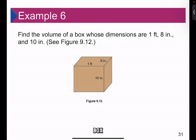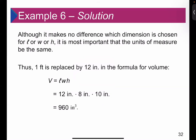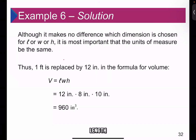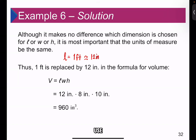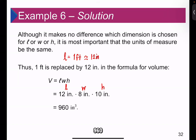For example, find the volume of a box whose dimensions are 1 foot, 8 inches, and 10 inches. It is most important that the units of measure be the same, so we convert 1 foot to 12 inches. Then V = 12 × 8 × 10 = 960 cubic inches.